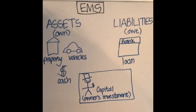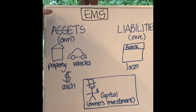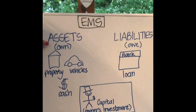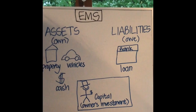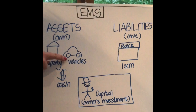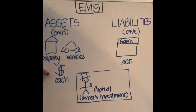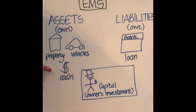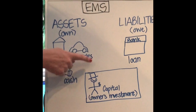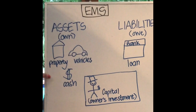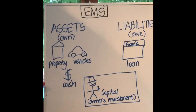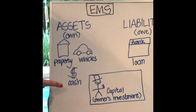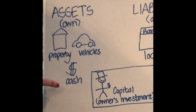Hopefully by now you understand that your assets are the things that you own. This could be things like your property, vehicles, or the cash that you have in your business that you can use to buy stock. So all of these assets are things that you've got control over and will use in your business to try and generate an income of some kind.